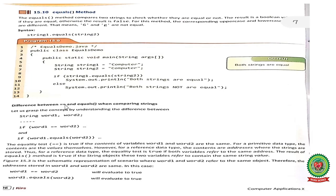Primitive means basic data types like int, char, short, long, etc. And this equals method can be used for reference data type.